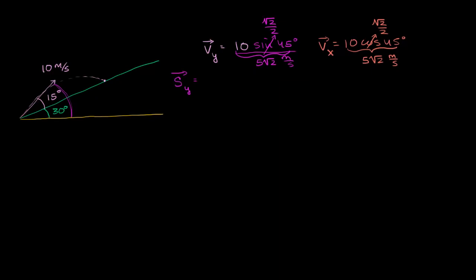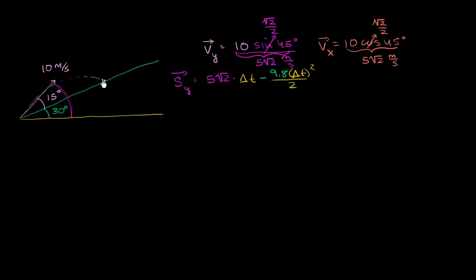Now let's write the vertical displacement equation. The vertical displacement equals our initial vertical velocity, 5√2, times change in time, plus the acceleration. The acceleration is −9.8 m/s². So the vertical displacement equals 5√2 · Δt − 4.9 · Δt².